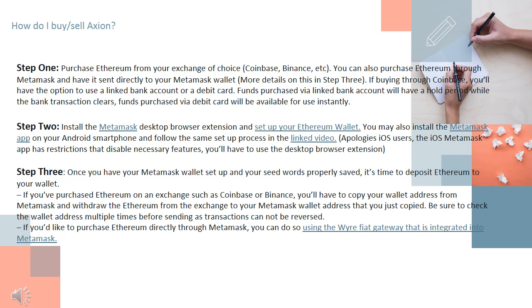Step 2: Install the Metamask desktop browser extension and set up your Ethereum wallet. You may also install the Metamask app on your Android smartphone and follow the same setup process in the linked video. Apologies, iOS users — the iOS Metamask app has restrictions that disable necessary features, so you'll have to use the desktop browser extension.